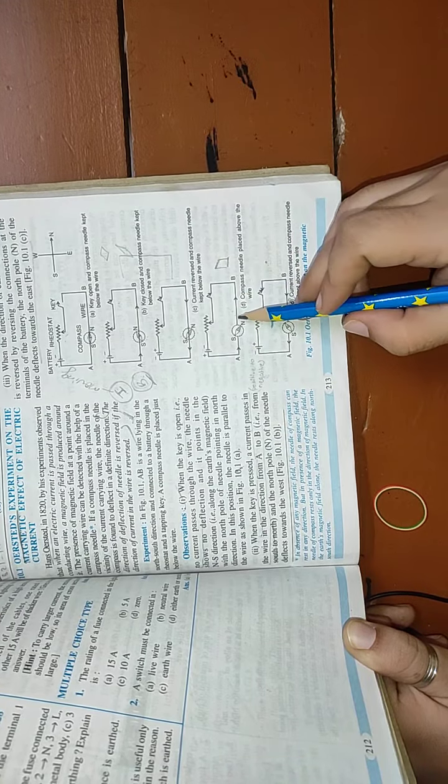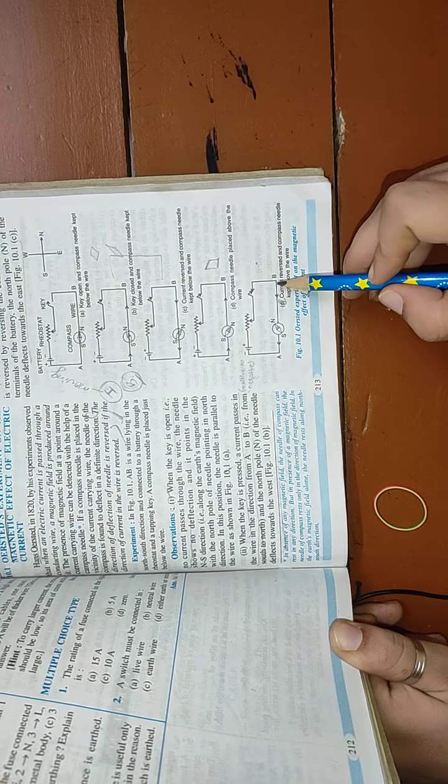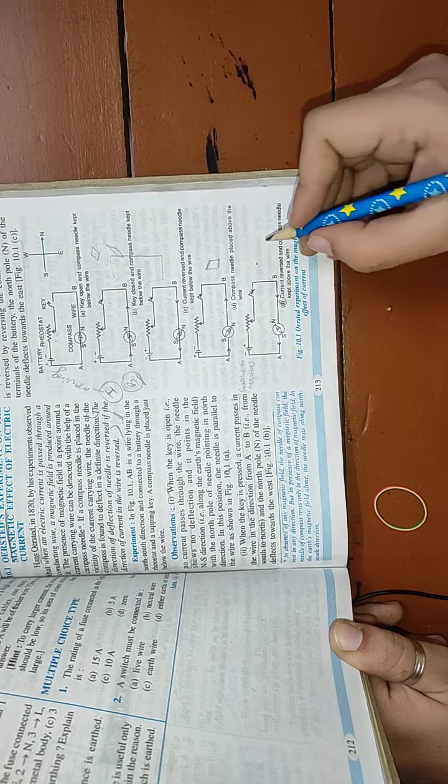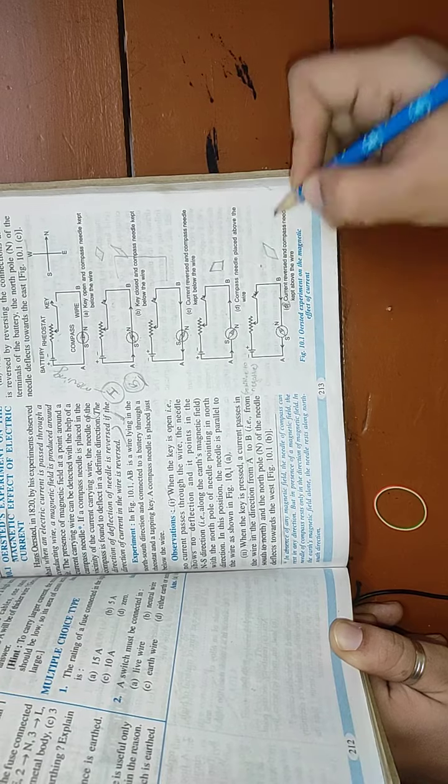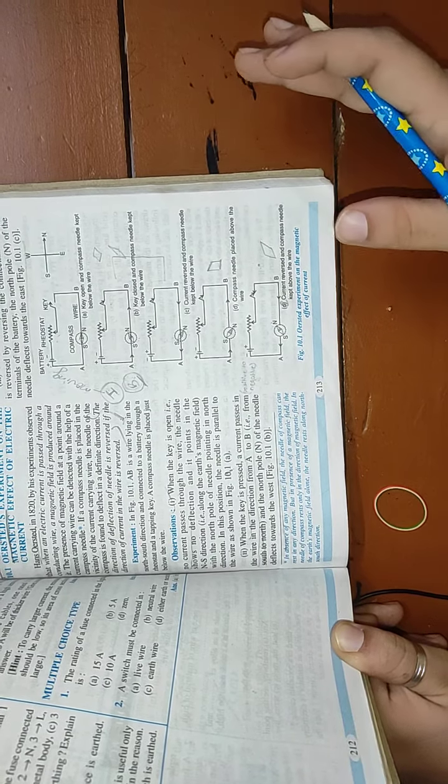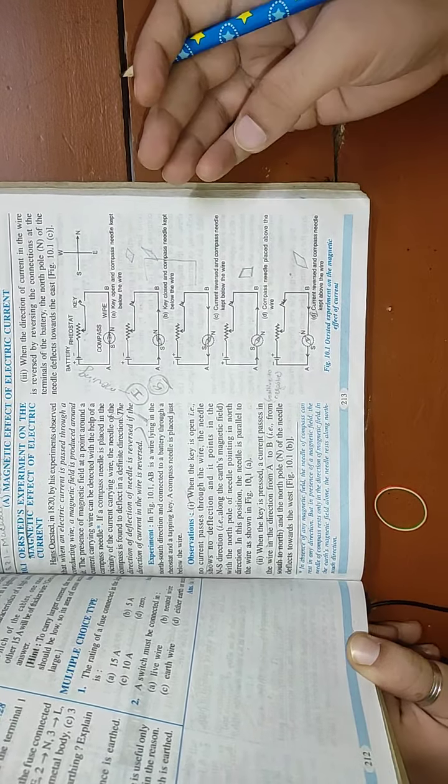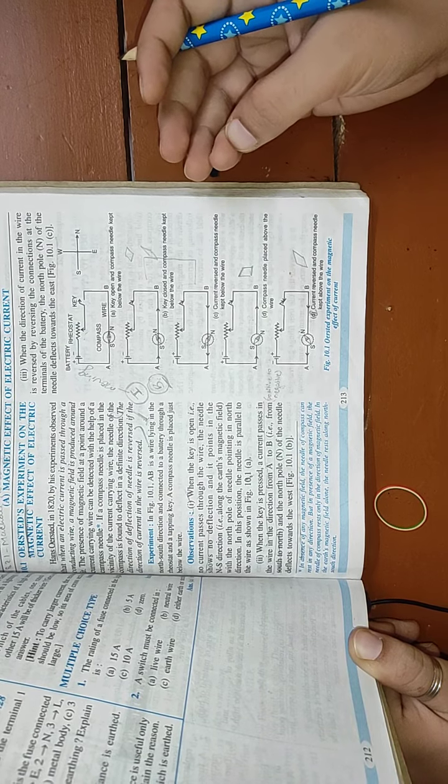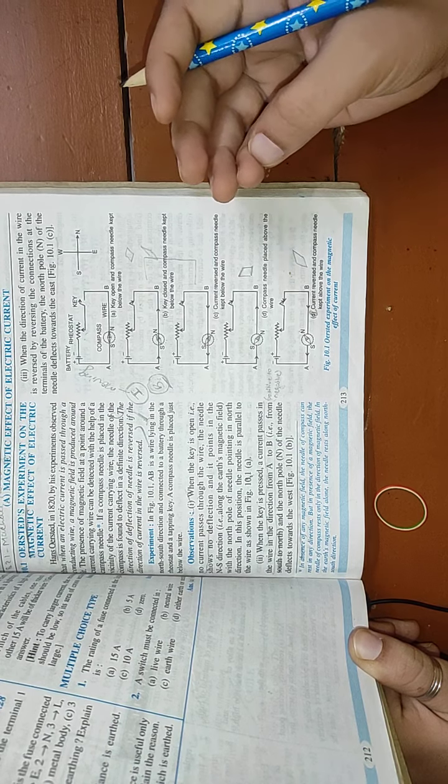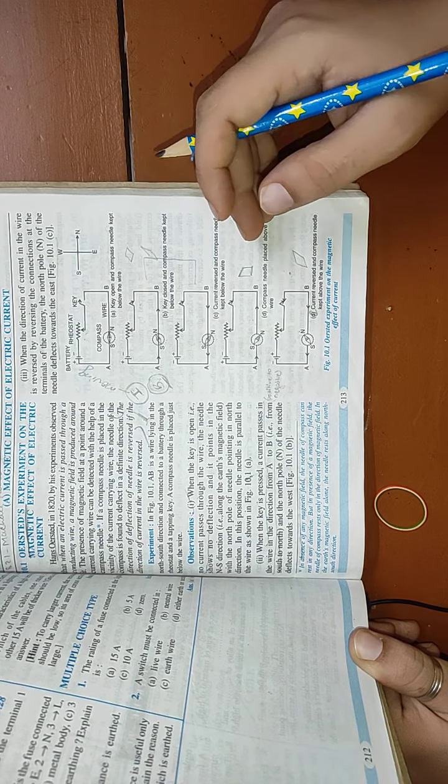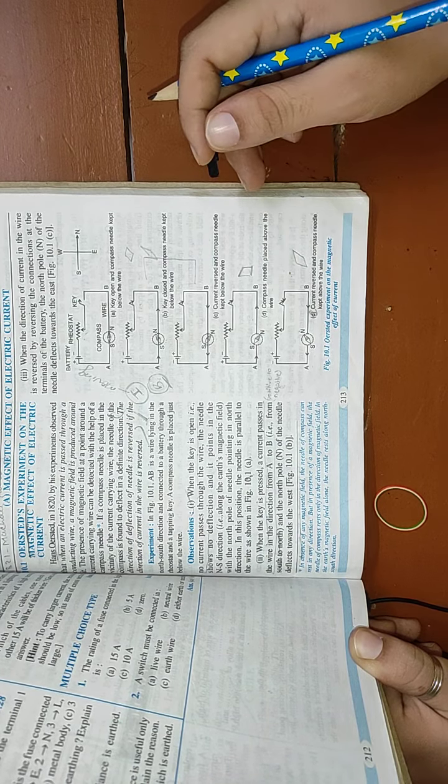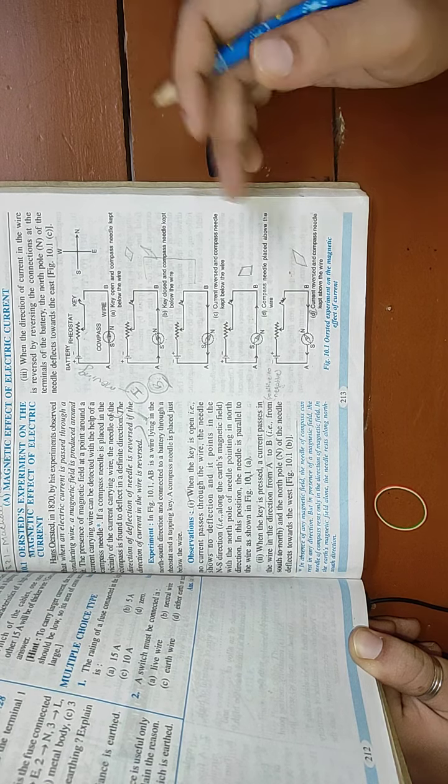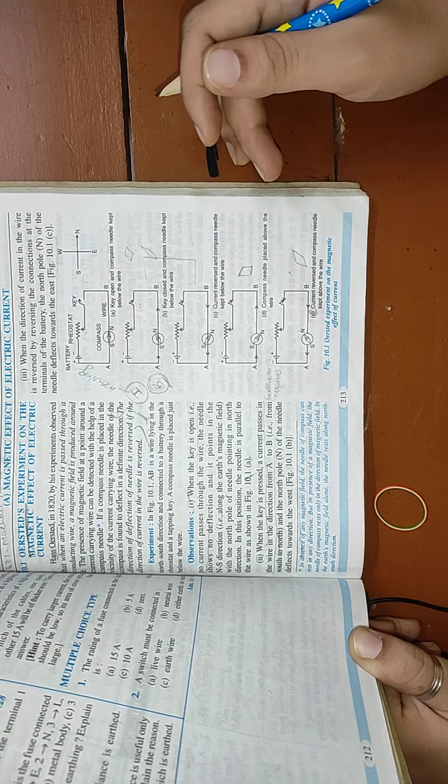Now if the direction of current is reversed, if the current will flow from B to A end, then the needle will deflect this way. Basically what you must remember is that if the direction of current is reversed, the direction of deflection of needle will reverse. And if the needle is kept above or below the wire, that condition will also affect the deflection of the needle or the compass.